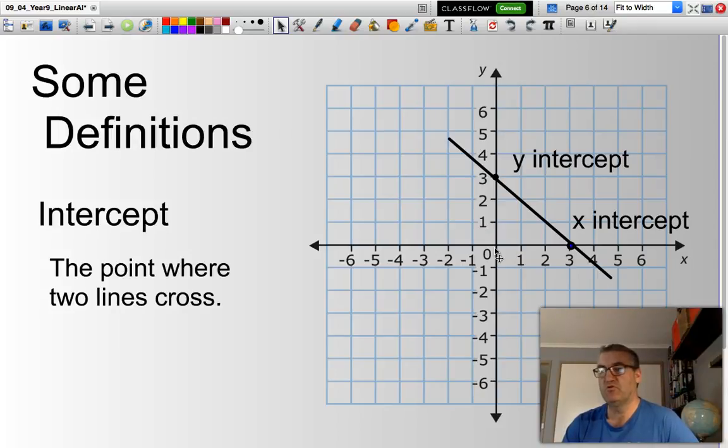We substitute the fact that for the y-intercept, the value of x equals 0, or for the x-intercept, the value of y equals 0. We substitute that information into our equation.